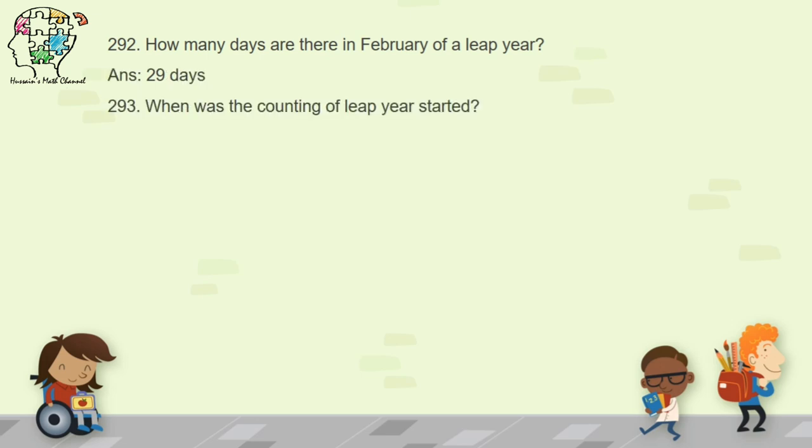Question 293: when was the counting of leap years started? Leap years started from 8 AD. AD stands for Anno Domini, which means after the birth of Prophet Isa (peace be upon him).